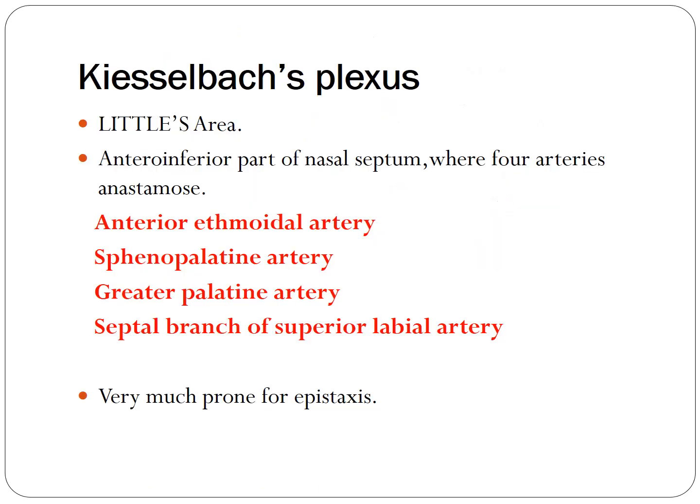In any nasal trauma, the most commonly seen sign is bleeding — epistaxis. Most of the time the bleeding is from Little's area, located at the anterior inferior part of the nasal septum. This area is prone to bleeding because it contains Kiesselbach's plexus — a mesh of vessels comprising the anterior ethmoidal artery, the sphenopalatine artery, the greater palatine artery, and the septal branch of the superior labial artery.